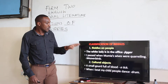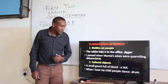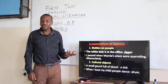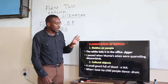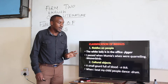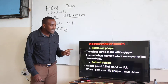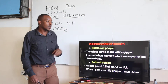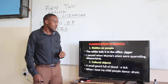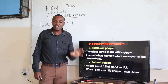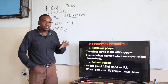The first category is riddles that are about people. An example: 'The white lady is in the office' — that is a riddle about people, and the response is 'Jira.' Another example: 'I passed when Mumia's wives were quarreling,' and the response for that is 'Riverbugs.' Those are examples of riddles that talk about people.